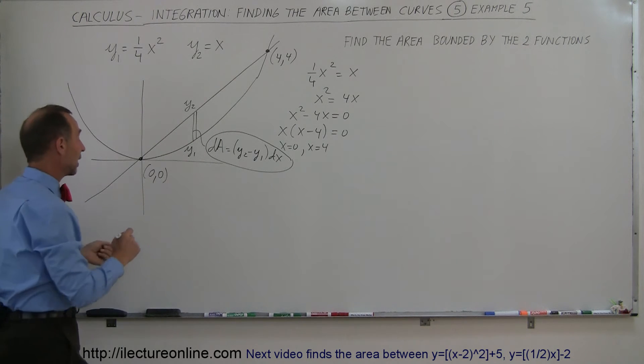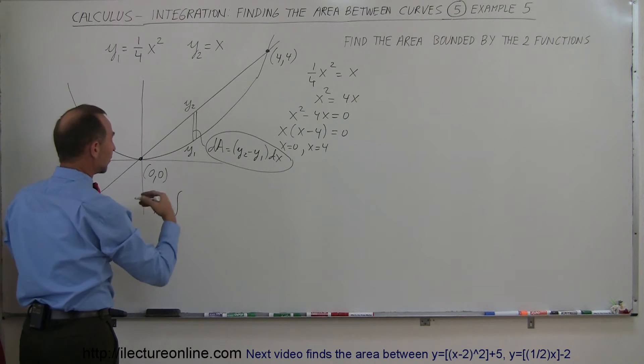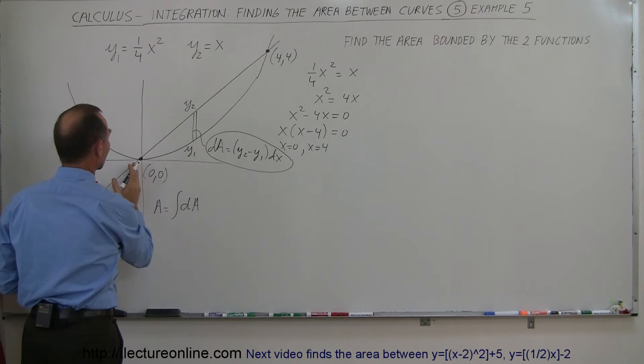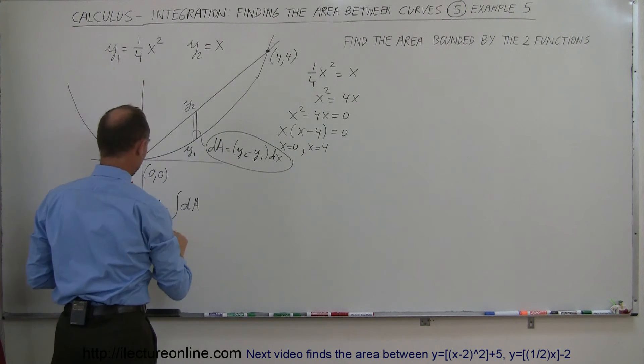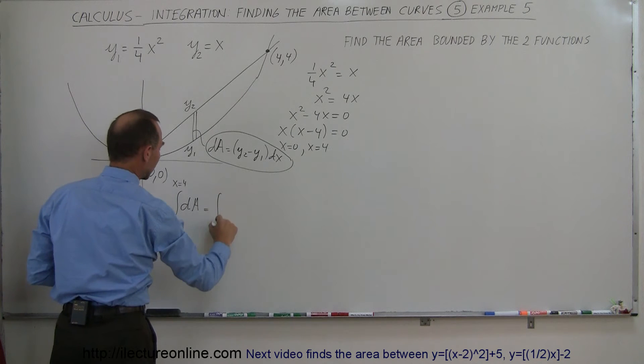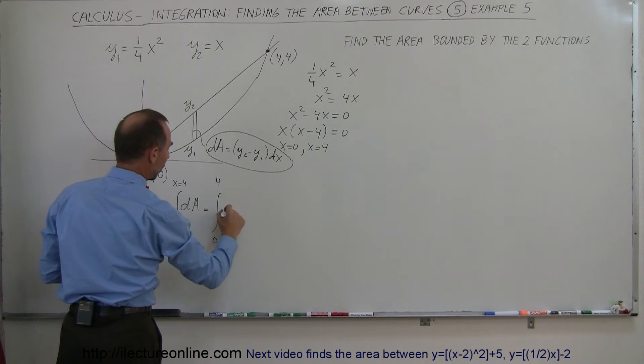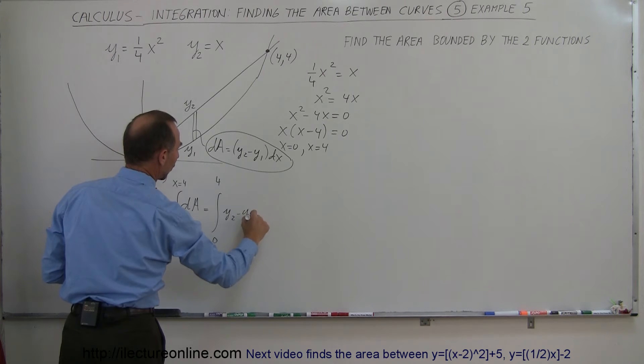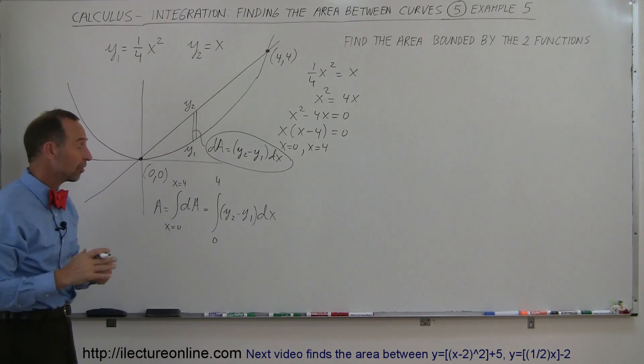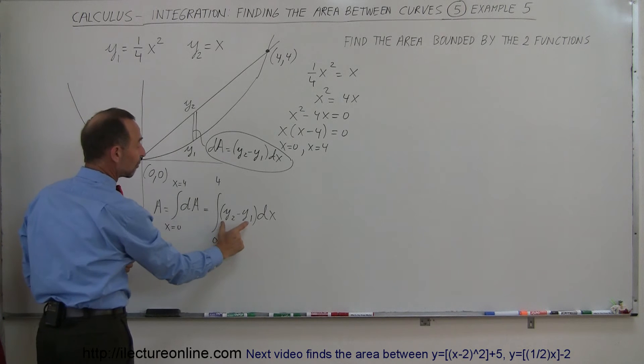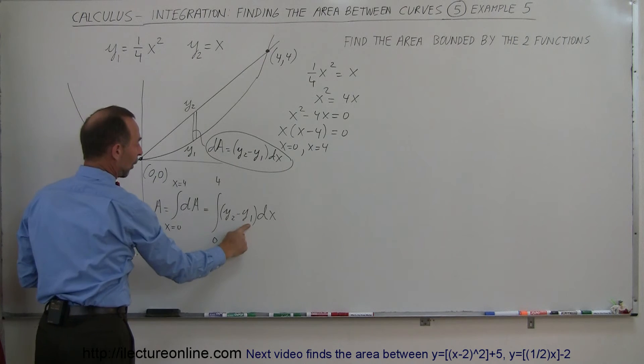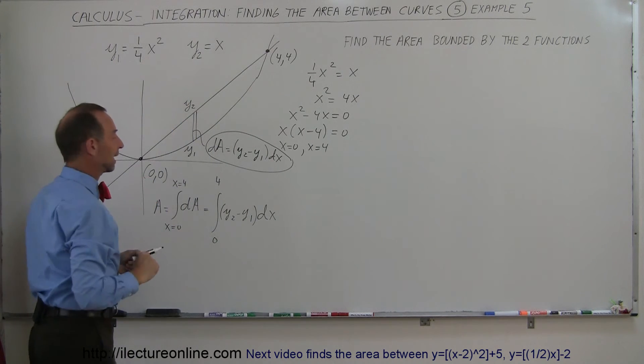Now I'm going to find the area, and the area is going to be equal to the integral of all my dA's. I'm going to integrate from x equals 0 to x equals 4, and that's equal to the integral from 0 to 4 of y2 minus y1 times dx. Notice I have y's and x's under the same integral sign. That means I have to find the x equivalent of these two functions. So y2, that would be equal to x,